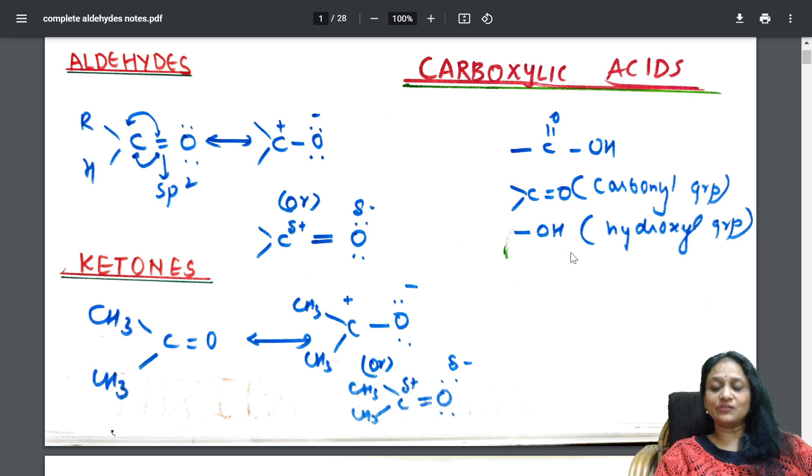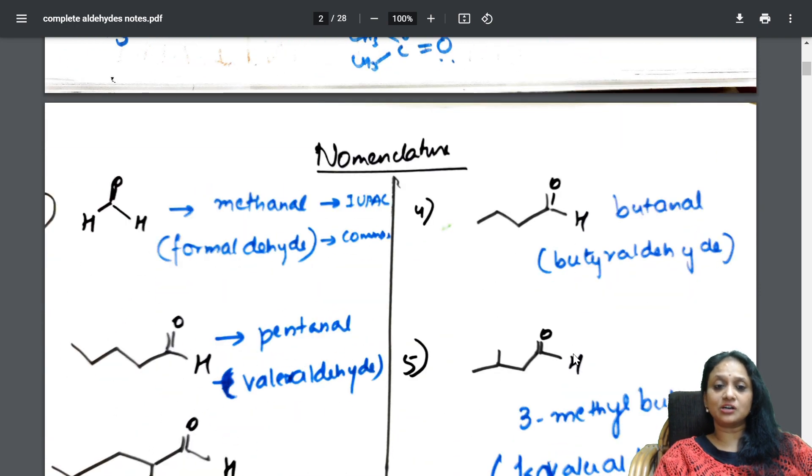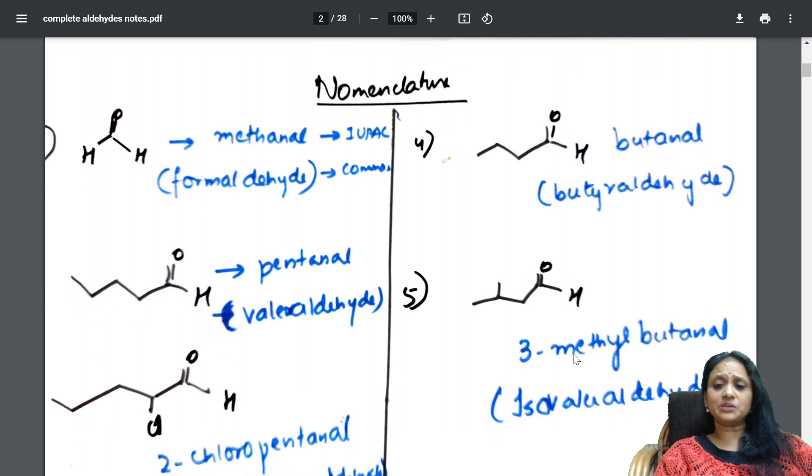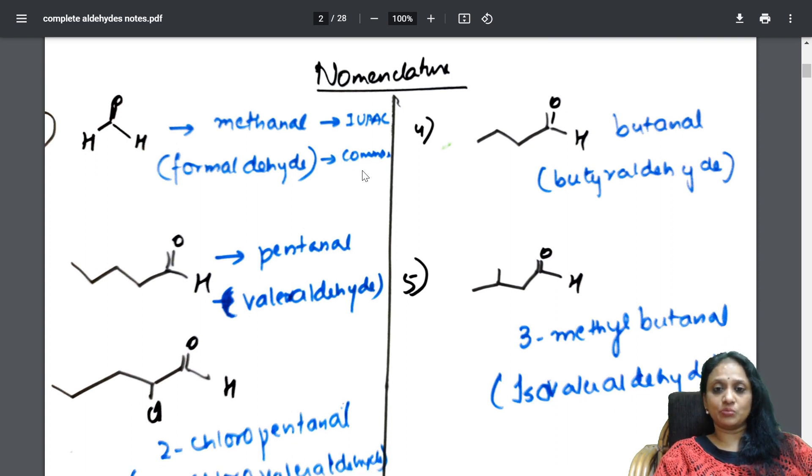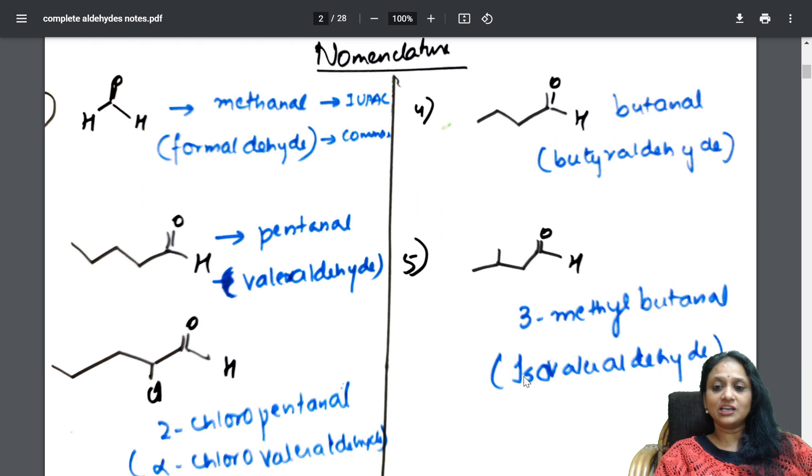So like that, I have given you the complete structure of all the three. Slowly, I have taken you into a concept called nomenclature. So in nomenclature, all the important examples along with IUPAC name and common name. Just check, IUPAC name and common name is mentioned in the brackets like that. Important examples I have taken mentioning IUPAC name on the top, common name below.